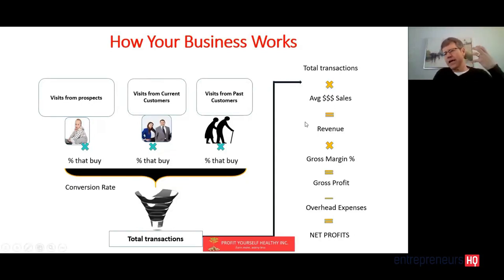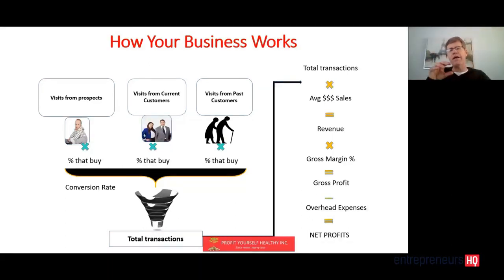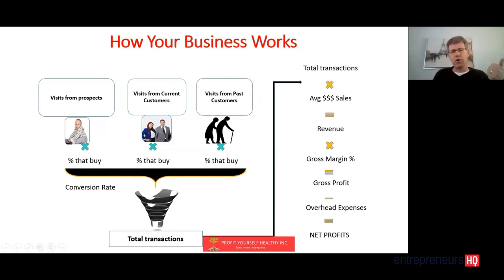If we take our transactions and multiply it by our average sale, we get our sales revenue — and this is for all businesses. Now, we take our sales revenue and times it by our gross margin. Our gross margin is the difference between what we're selling our product or service for and what it costs us. We figure out what that gross margin percentage is, times it by our revenue, and we get our gross profit. If we subtract our overhead expenses, then we get our net profits. That's the simple business model that every business works under.